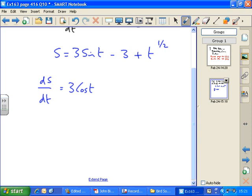The constant disappears, so minus 3 is gone, plus half t to the minus one half, bringing the power down in front.